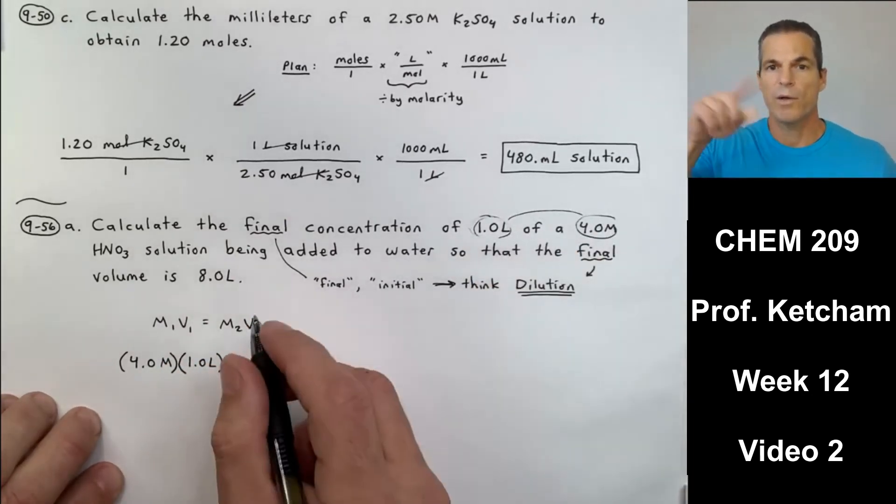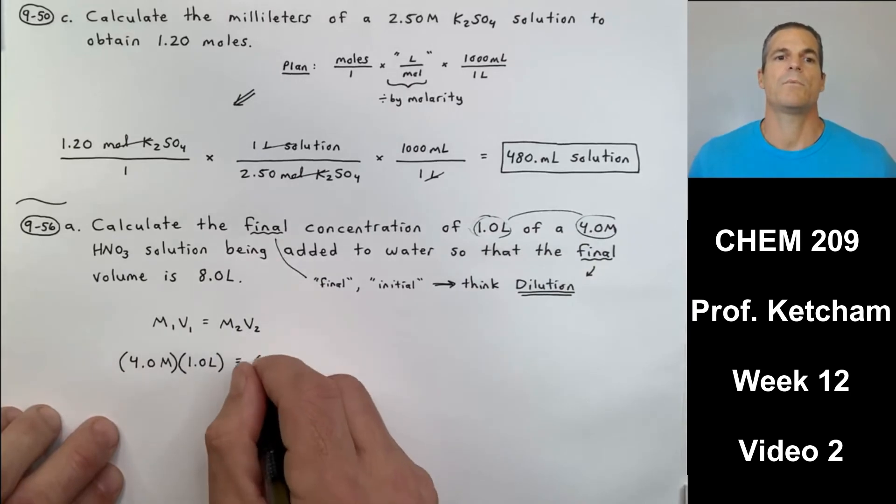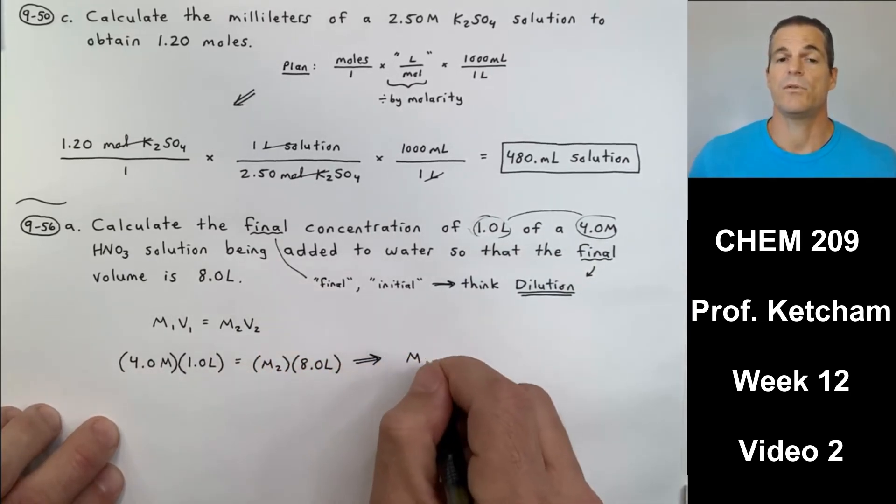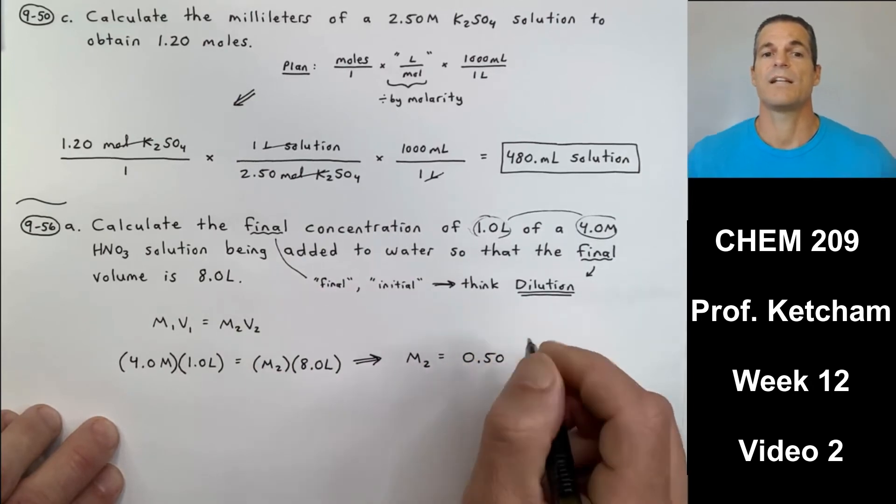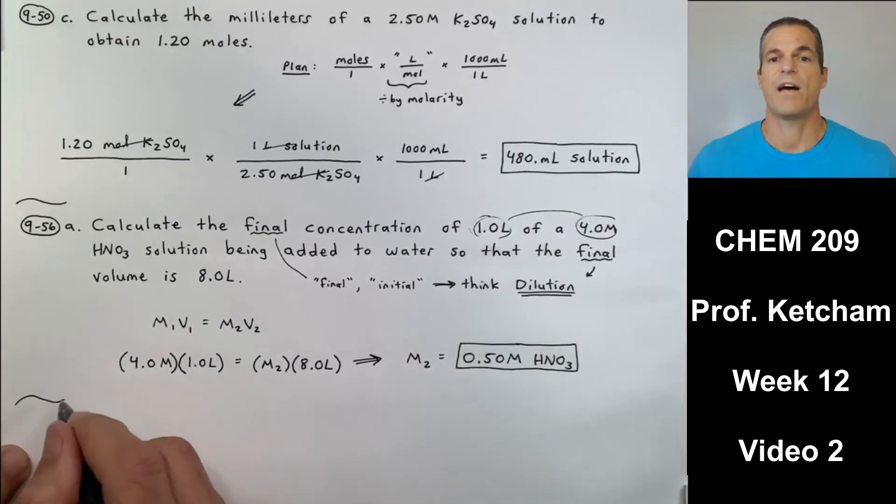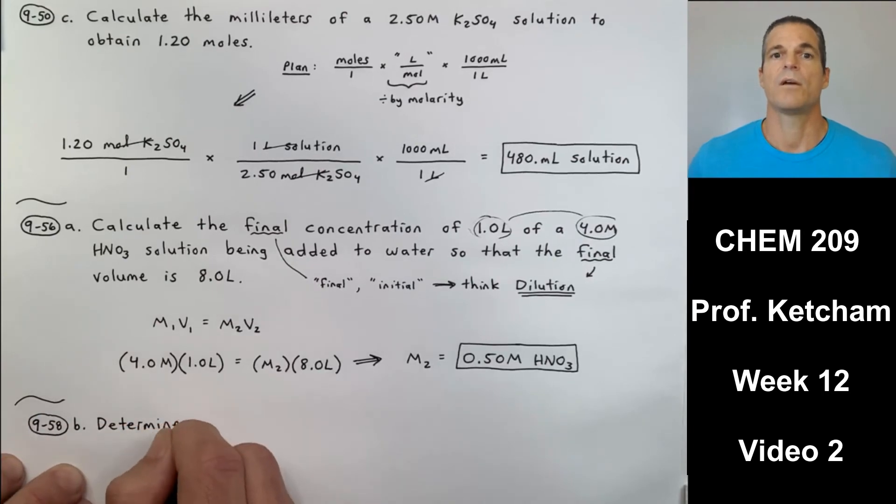I got my one liter going with the 4 molar. So 4.0 molar times 1.0 liter equals my unknown M2 times the new more dilute volume, 8.0 liters. The molarity is 0.50 molar HNO3. Not just 0.50 molar, but 0.50 molar HNO3. Don't forget all your units.